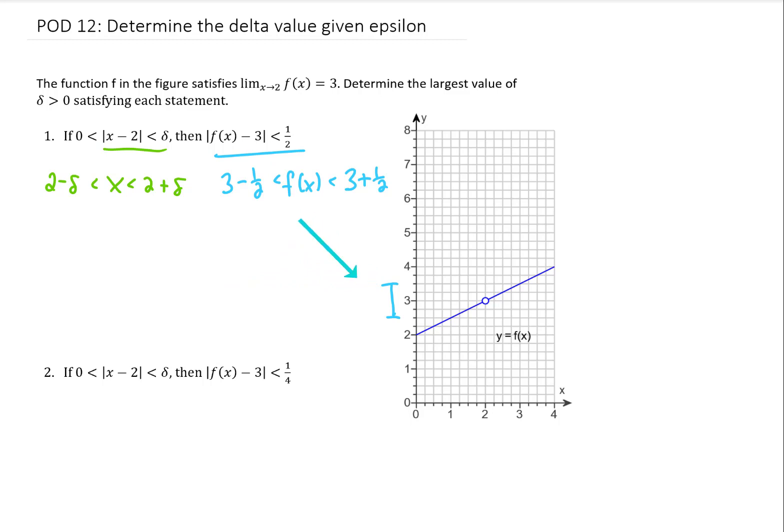Now the question this problem is asking is for what x values are the y values on this graph in this range? Well we can kind of draw dotted lines to connect our x values and our y values. But it looks to me like if our x values are in this domain down here between 1 and 3, then our y values are going to be up in this range between 2 and 1 half and 3 and 1 half.